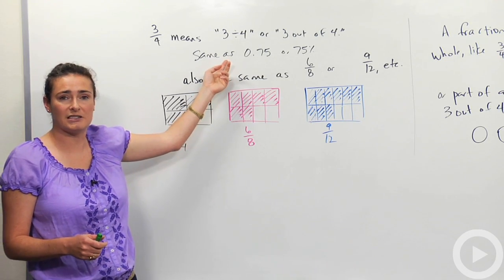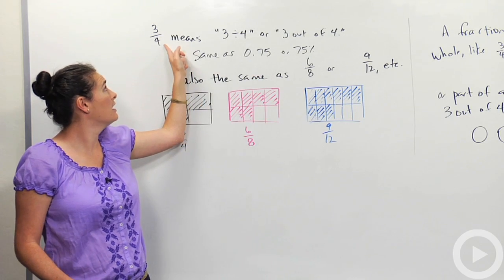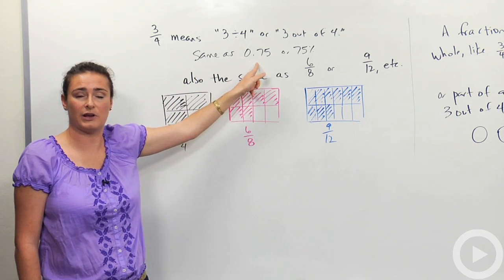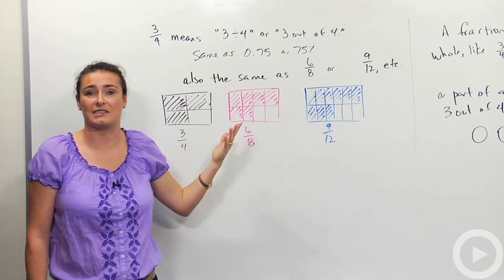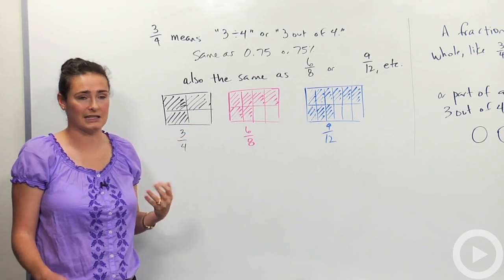If you want to turn them into decimals or percents, and we'll get more into that, this decimal 3 divided by 4 on a calculator is 0.75. You could also write that as 75%. It's all the same value, and that's the key idea of a fraction.